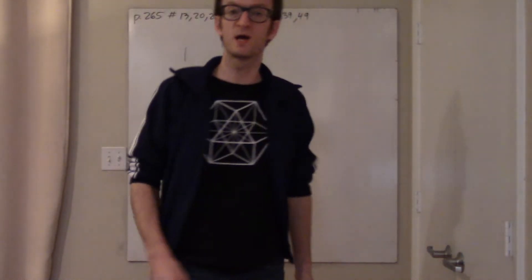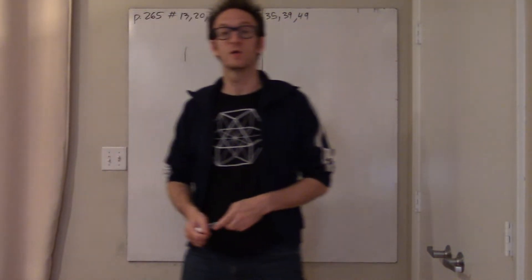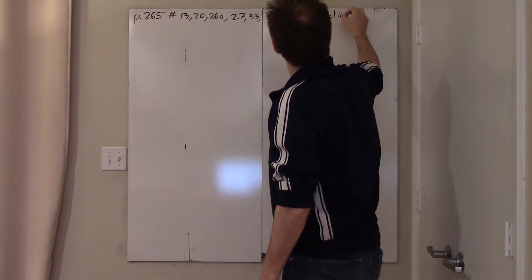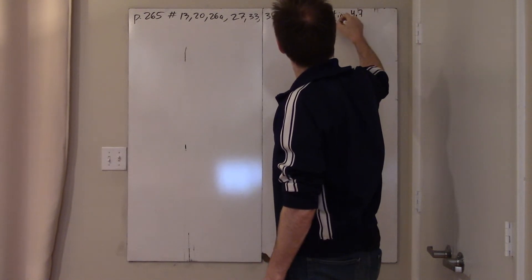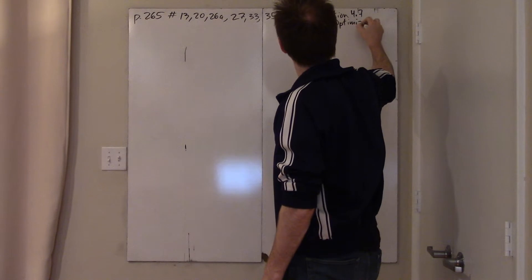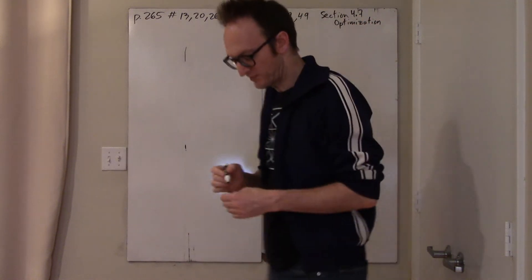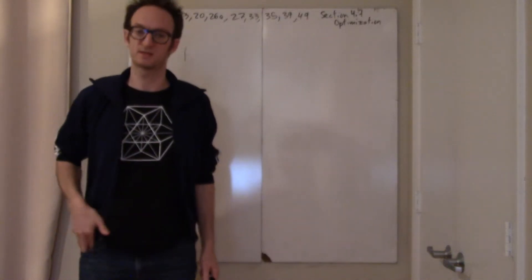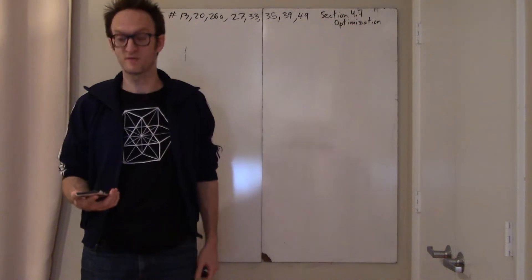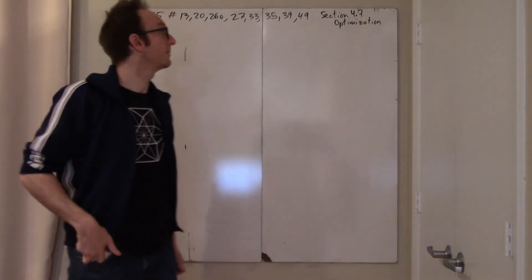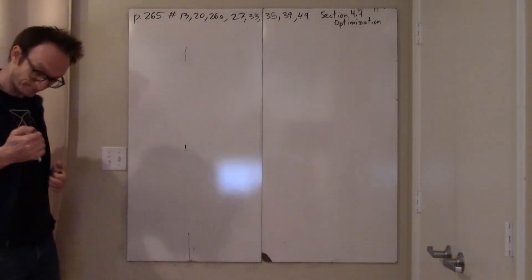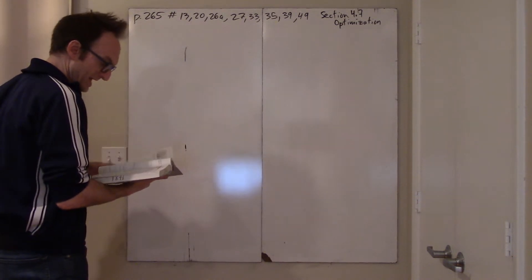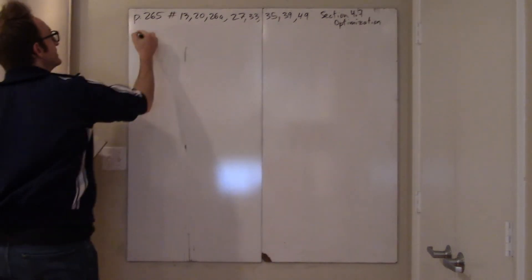Hello, I'm going to go over the homework on optimization — this is section 4.7. I think this is pretty exciting because it's one of the coolest things you can do with calculus. This is probably one of the hardest homeworks of the whole year. Let's go — number 13, and this is kind of a weird place to start, an atypical problem.